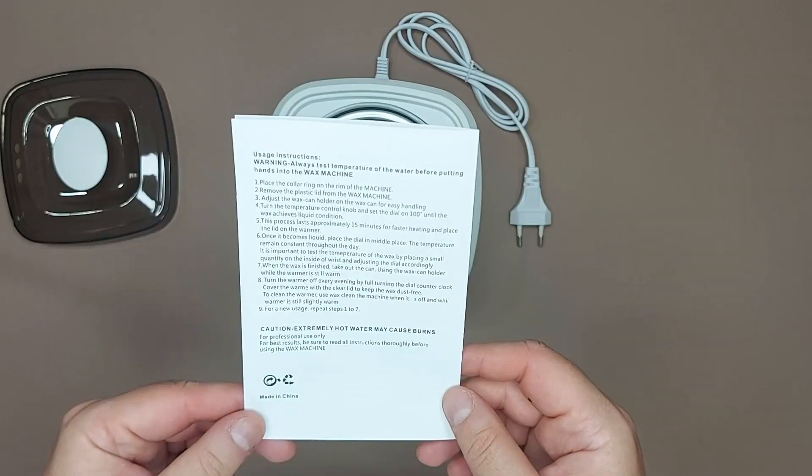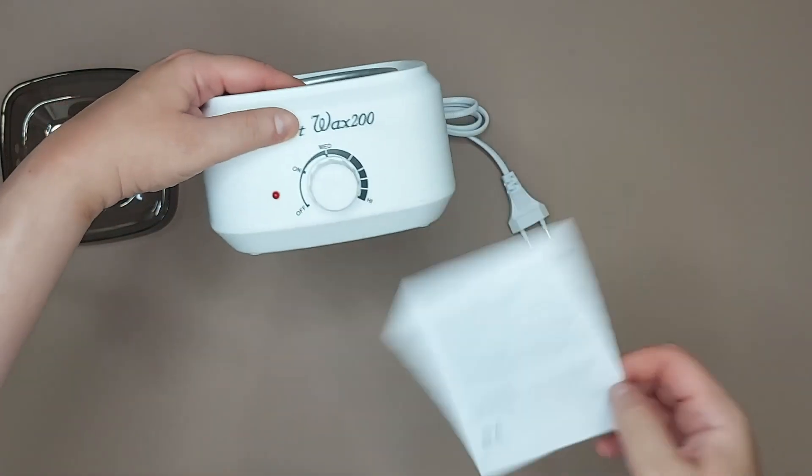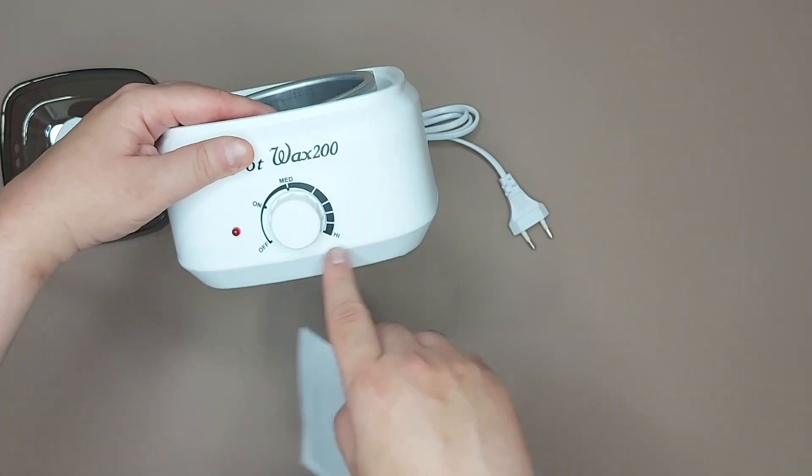You place the collar ring on the rim of the machine, remove the plastic lid from the wax machine, adjust the wax can holder on the wax can for easy handling, turn the temperature control knob and fit the dial on 100. Now I can't find 100 here exactly, it is mid and high.